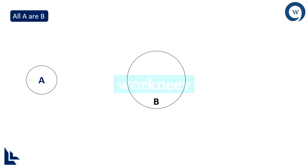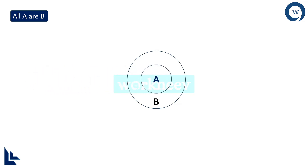The first one is All A are B. You see a circle here that is for A, and another circle that is for B. Now if I want to say All A are B, then the entire A should belong to B, and the Venn diagram would look like this. From next time onwards, if All A are B is given, write concentric circles where A has to be the inner circle and B has to be the outer circle.